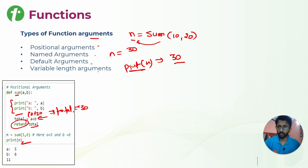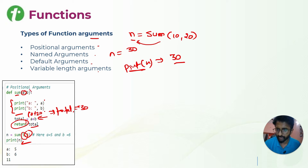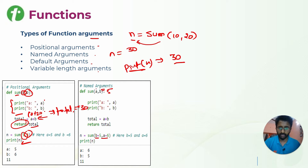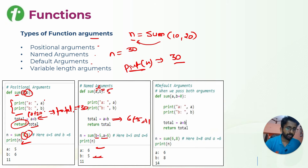Since whatever you pass first is taken as a and whatever you pass second is taken as b, this is called positional arguments. Similarly, if you specify b=5 and a=6 as named or keyword arguments when calling the function, it will assign a=6 and b=5, so the result will be 6 plus 5, which is 11.